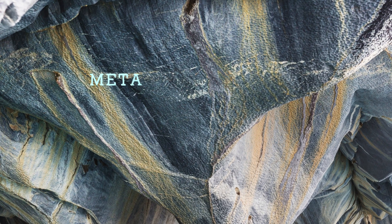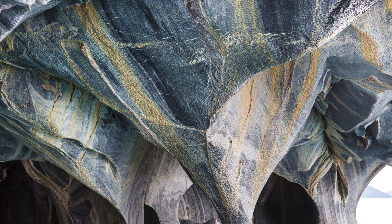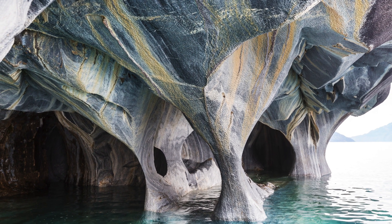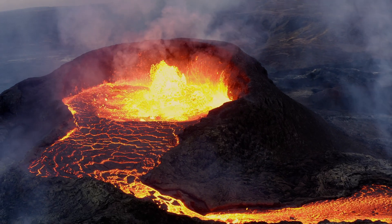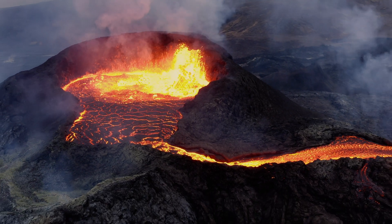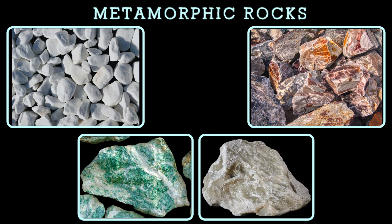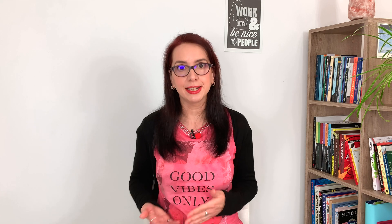And finally, metamorphic rocks are either igneous rocks or sedimentary rocks which were transformed over long periods of time because of high pressure and high temperature conditions in their environment. As we've also seen in the magma video, varying the temperature and pressure conditions a material is exposed to can change its structure, creating a new form. Some examples of metamorphic rocks include marble, mariposite, novaculite, and soapstone.